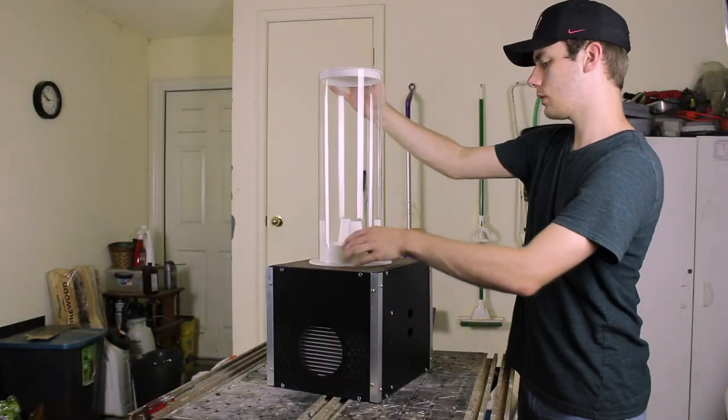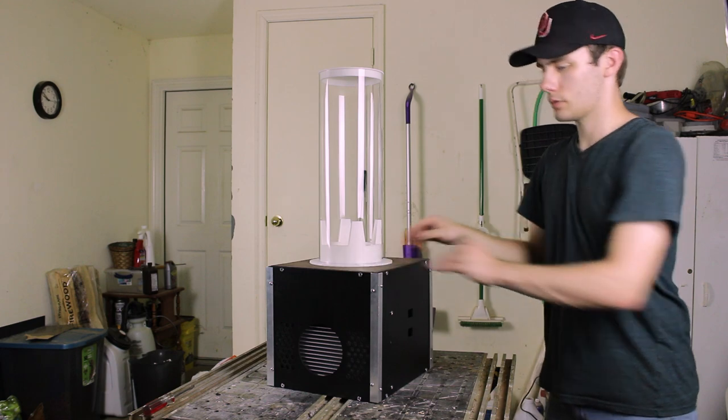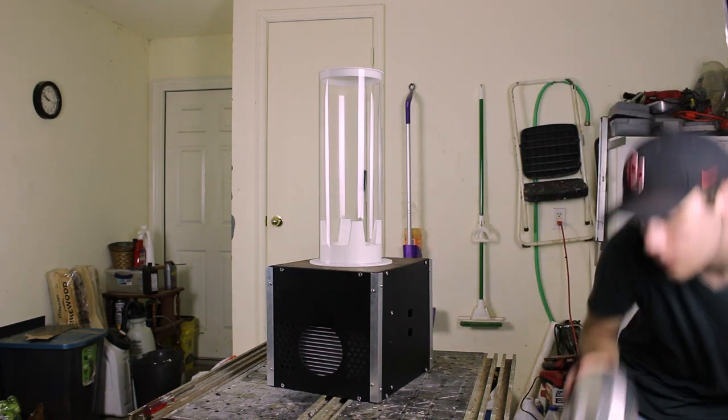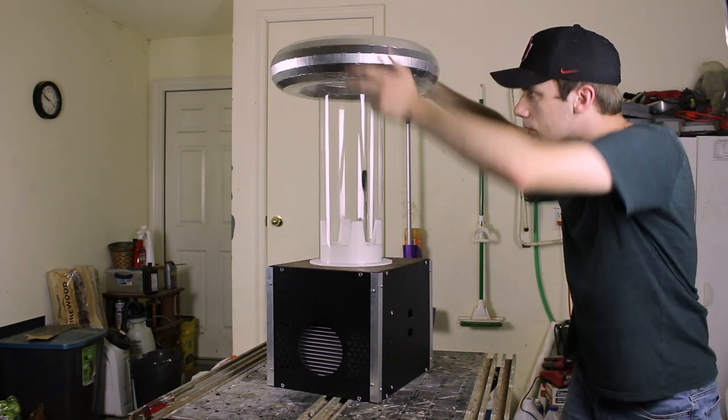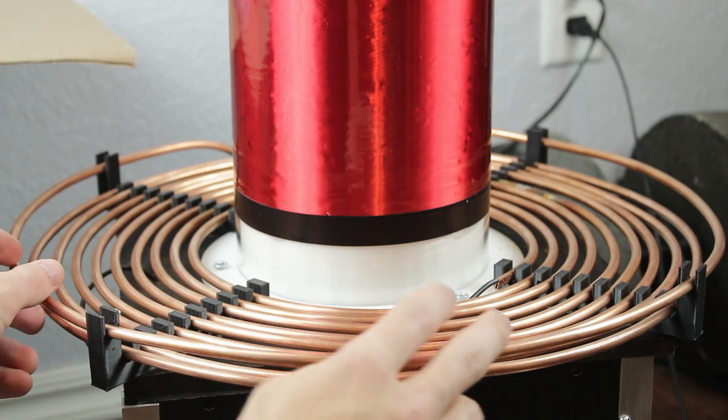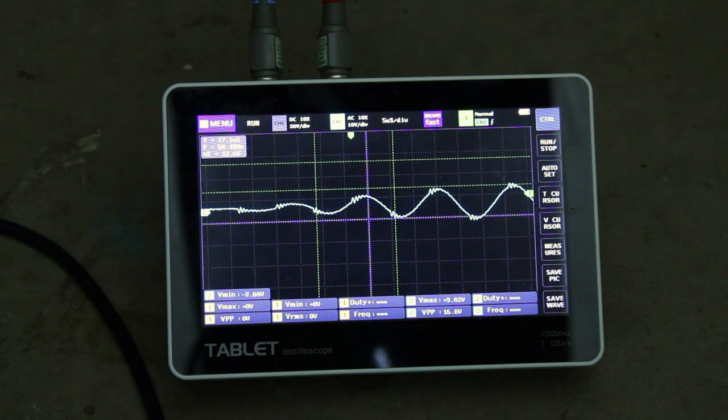Now, if you want to see the design process for a large DRSSTC like this, I recommend checking out the part 1 video, because I won't be going into nearly as much detail on this one. This video will be mostly focused on the overall build layout and the coil's operation and performance. So, without further ado, let's get into it.